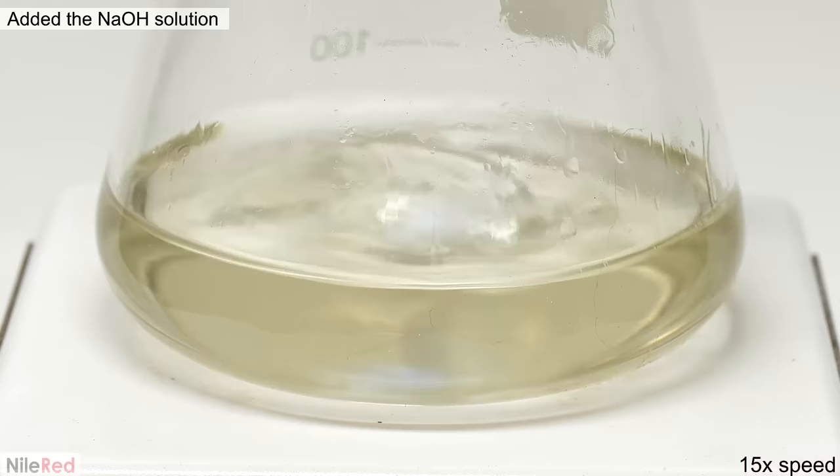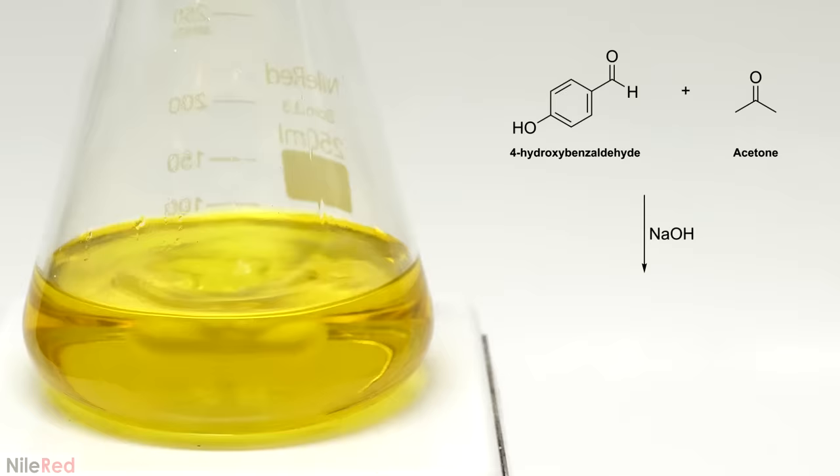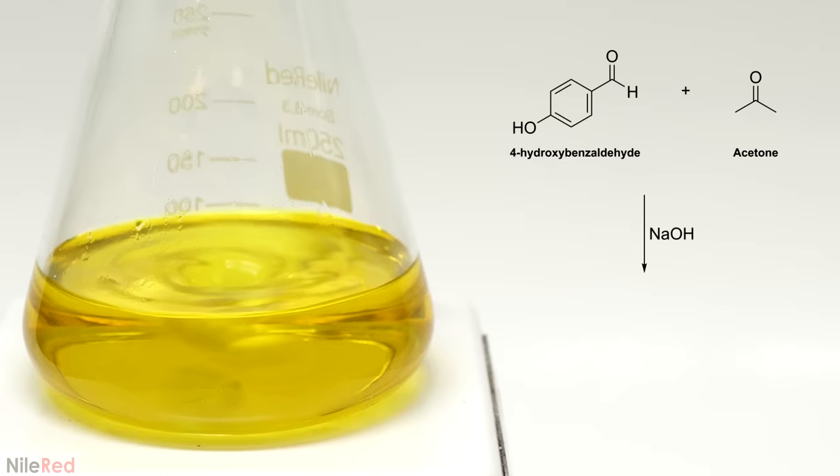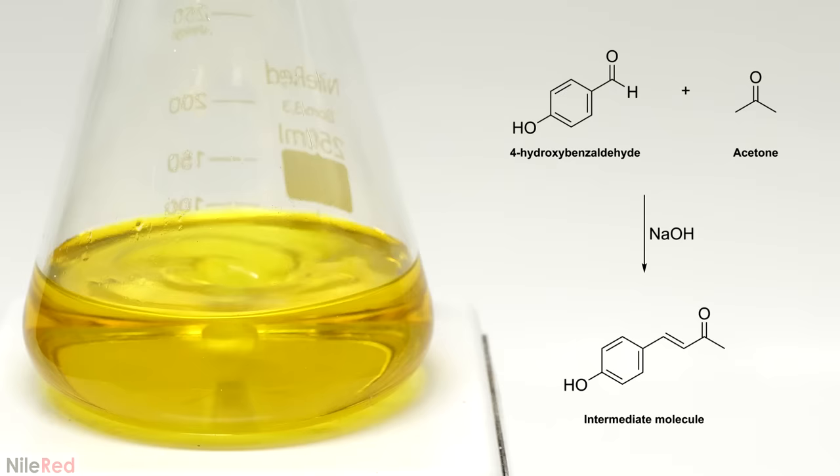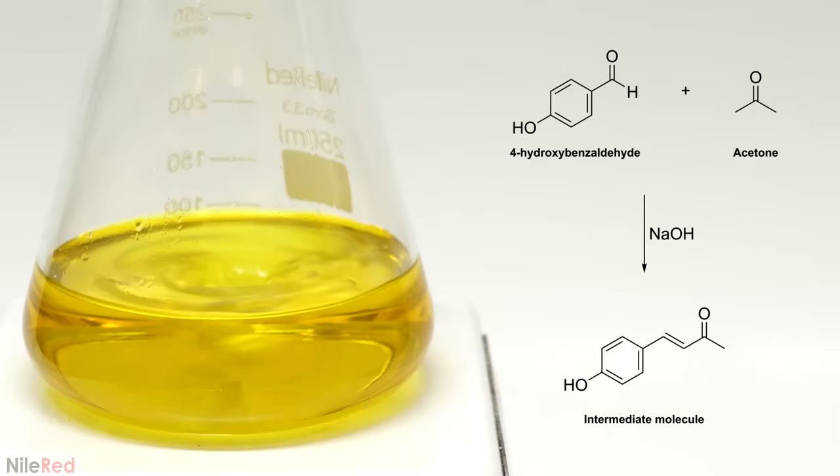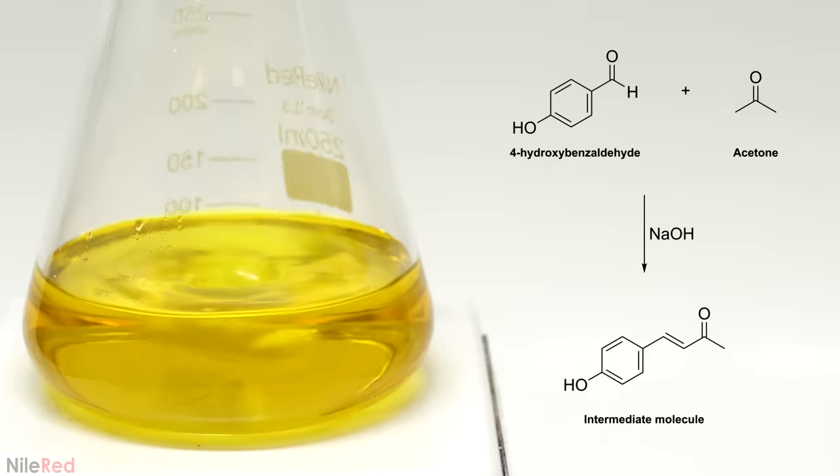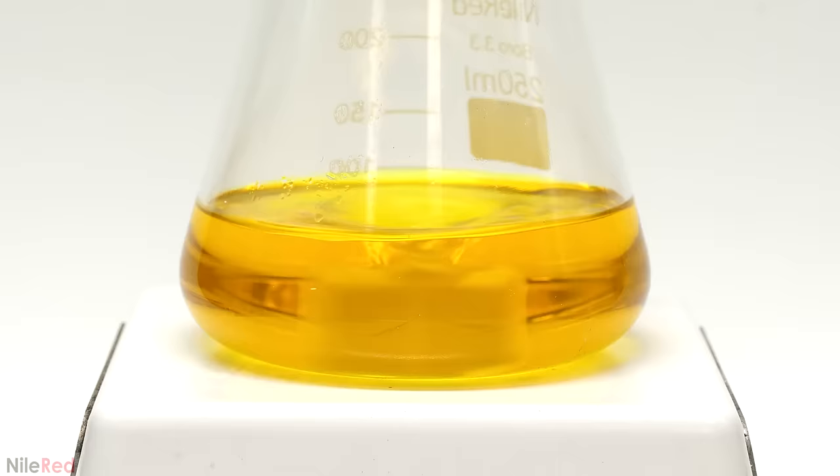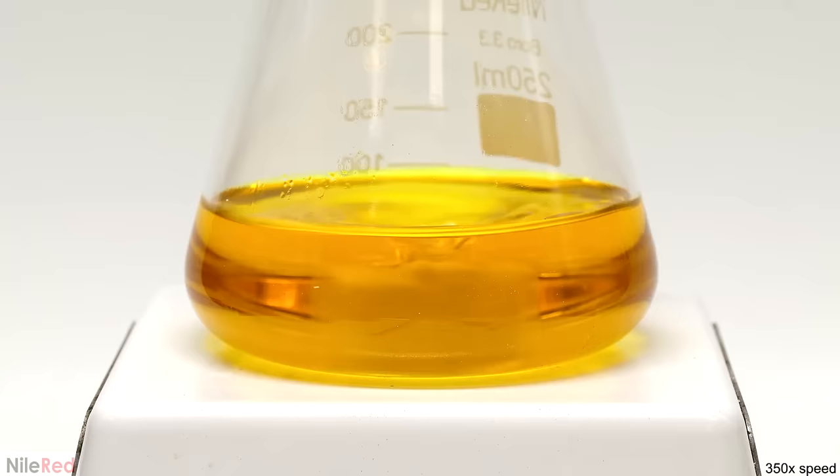Now the next step was with strong stirring to slowly add the sodium hydroxide solution. This caused its color to slowly change and by the time it was all added it had turned yellow. What's going on here is a reaction between the acetone and the 4-hydroxybenzaldehyde and it's catalyzed by the sodium hydroxide. This reaction is generally known as an aldol condensation and a new carbon-carbon bond is forming between the two molecules. The result is this intermediate molecule which is actually very close to the final raspberry ketone. However, it still has this double bond which I'll have to get rid of with another reaction.